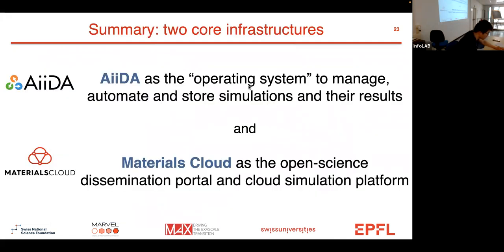As summary, there are two core infrastructures. The first is AiiDA, which is like an operating system to manage, automate, and store your simulations and results. Materials Cloud is this open science dissemination portal and cloud simulation platform. AiiDA is like the Git to manage your source code, while Materials Cloud is like GitHub for you to share your code repository, but this is for our computational materials science community. That's this gentle introduction to AiiDA. I'm very happy to take any questions.